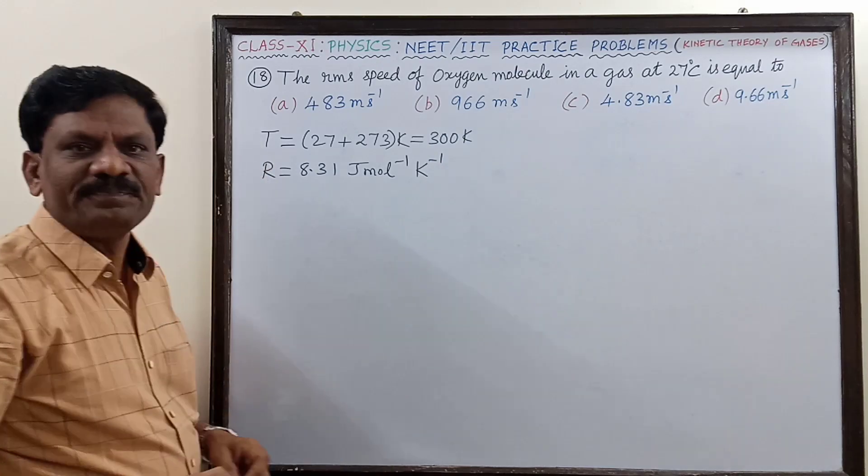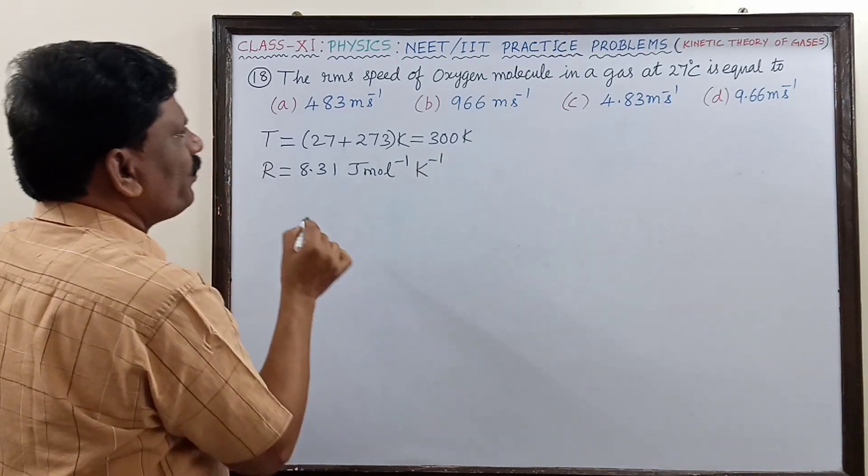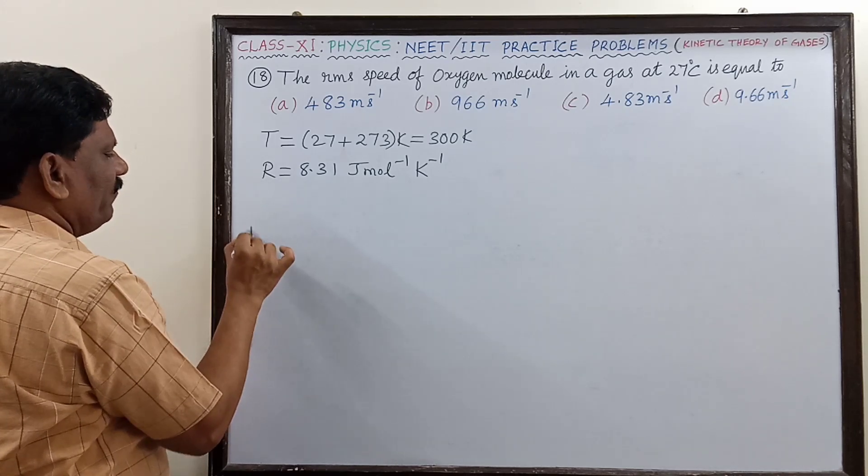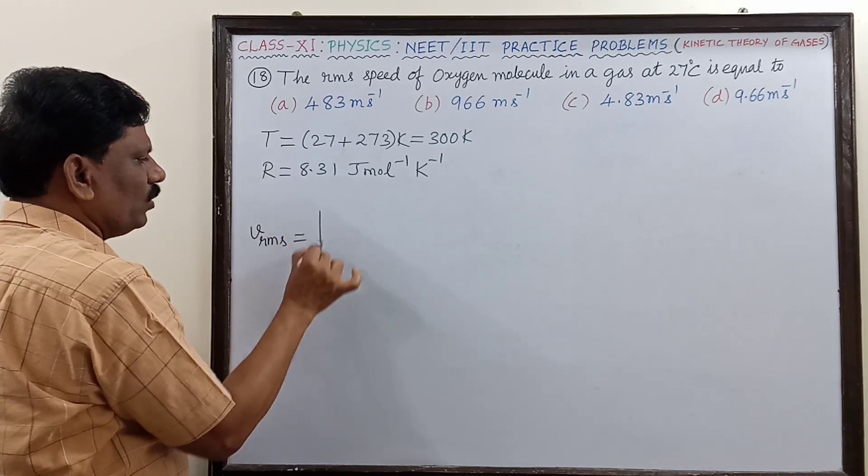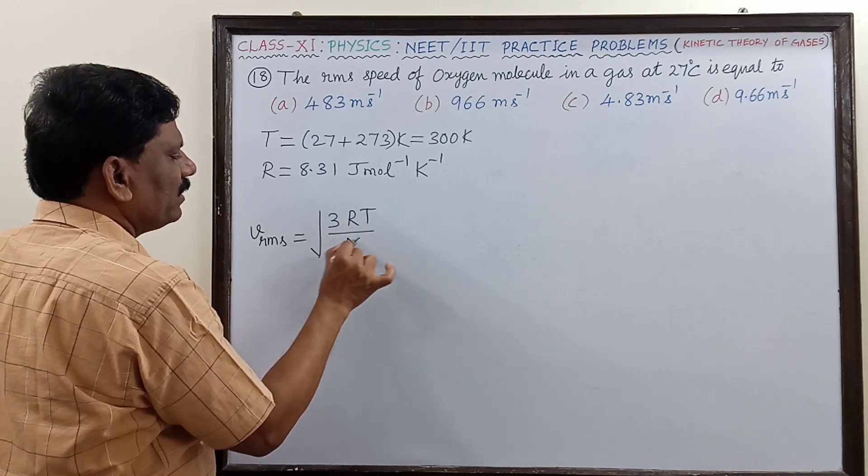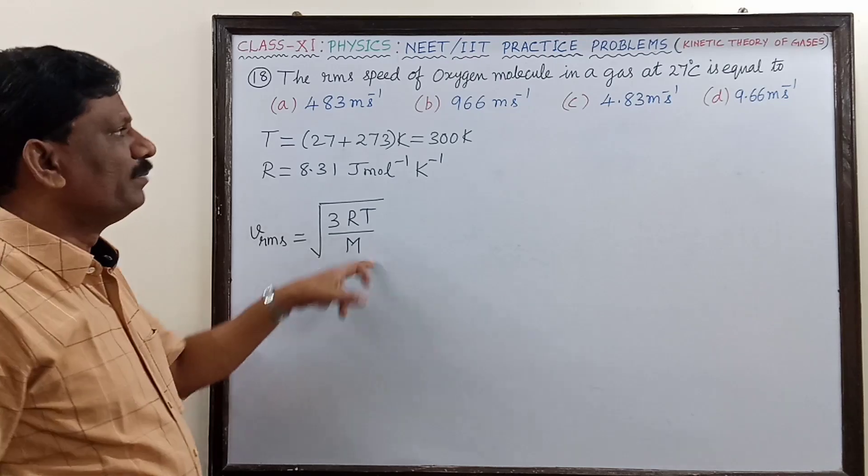Now what is the expression we are going to write? V_RMS is equal to square root of 3RT divided by M. What is M here? M is the molar mass of oxygen.